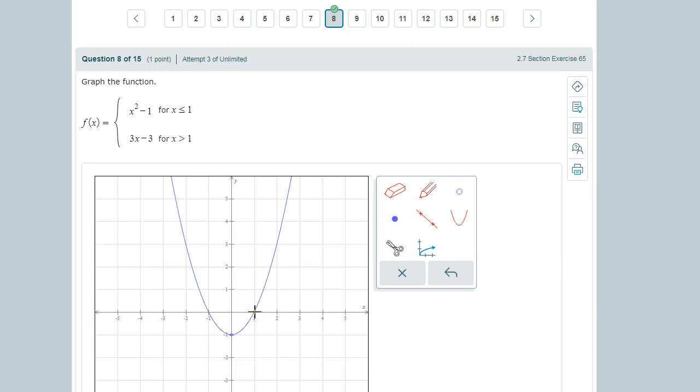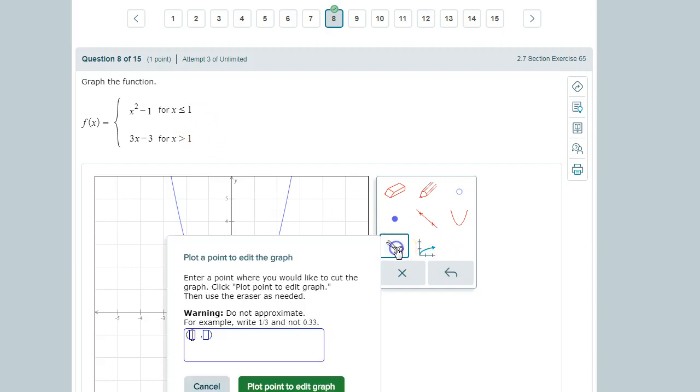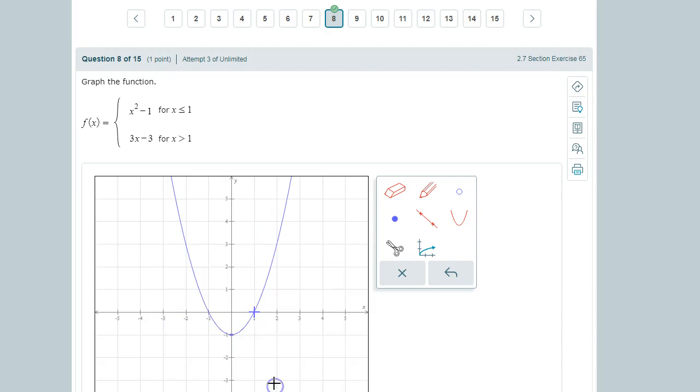This is the parabola, but this piece is defined only for x less than or equal to one, so we use the scissors to edit the graph. The x coordinate will be one, so x less than or equal to one - that's why we put one here. The y-coordinate when x equals one is one squared minus one equals zero, so we put in zero. Place a point at the graph.